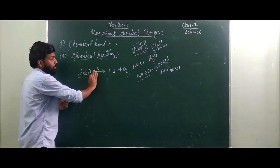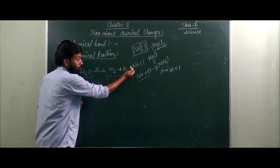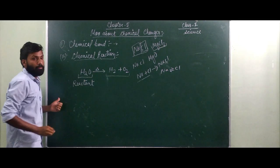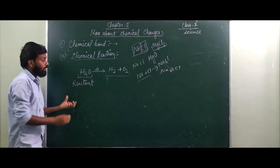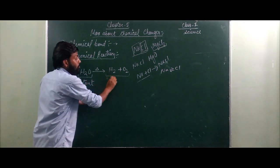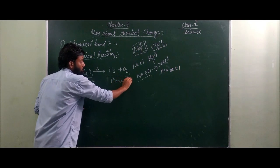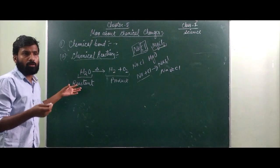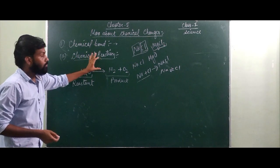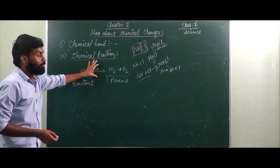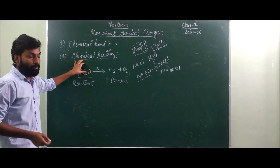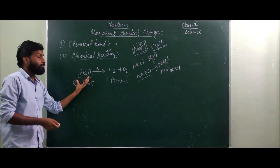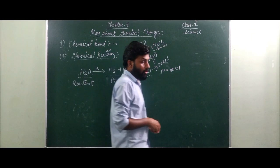In a chemical reaction you can see there are two parts. One is the left side of the arrow — this is known as the reactant, meaning which is going to take part in the reaction. And after the chemical reaction has occurred, you get some outcome. This outcome is known as the product. So in a chemical reaction we have reactants and we have the product. The substances which react are known as the reactant, and the outcome of the reaction is known as the product.